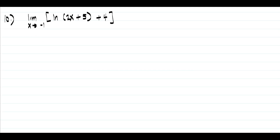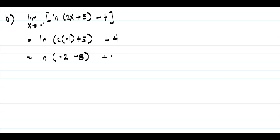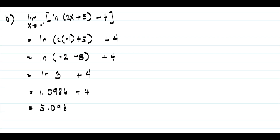On our last example, we have the limit of ln(2x + 5) + 4 as x approaches negative 1. Substituting: ln(2 times (−1) + 5) + 4, which is ln(3) + 4. Pressing ln(3) on a calculator gives approximately 1.0986, so the final answer is 1.0986 + 4 = 5.0986. I hope you've learned from this video — thank you so much for watching, and God bless us all.